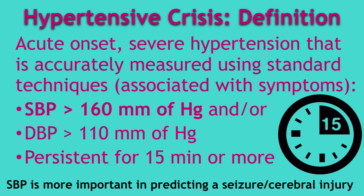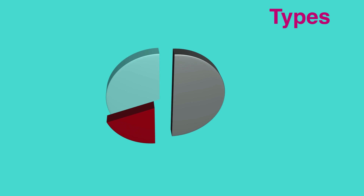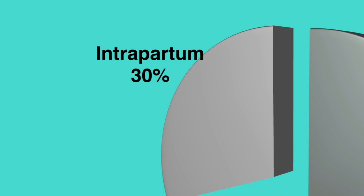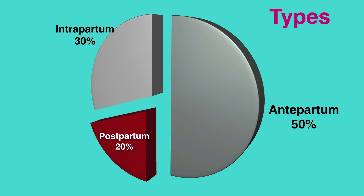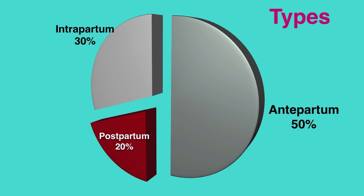This should be persistent for 15 minutes or more. Please remember that as per our current understanding, systolic blood pressure is more important in predicting a seizure or cerebral injury than diastolic blood pressure. As far as timing of occurrence is concerned, preeclampsia patients present with a seizure during pregnancy in 50% of cases — antepartum eclampsia. About 30% first present with a convulsion during labor — intrapartum eclampsia. The remaining 20% present after delivery, the so-called postpartum eclampsia.